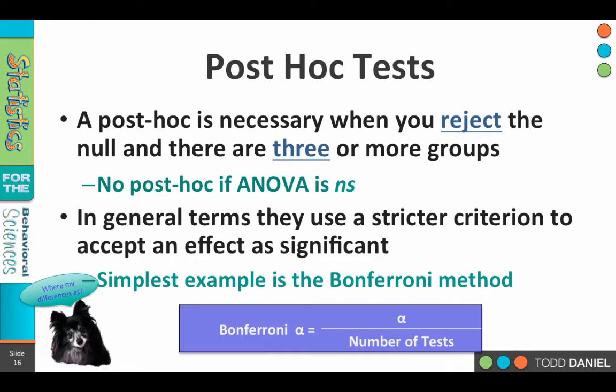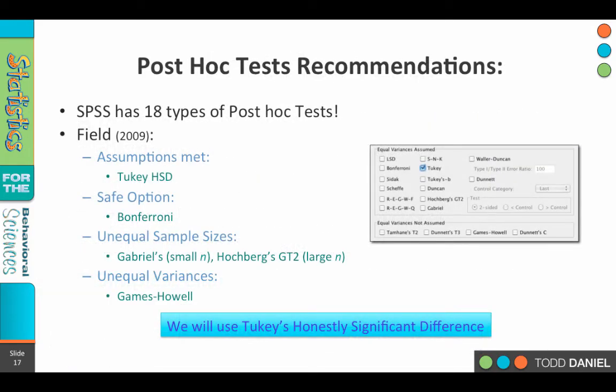As I said, this is the simplest method and the most conservative method, but not necessarily the best method, in that it can increase the chance for type two errors — the one where we miss an effect that is truly there. So there are other ways of approaching post hoc testing that can give us a nice balance between not inflating the type two error rate, but also making sure that we're only finding differences where they truly exist.